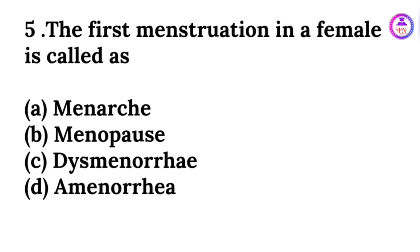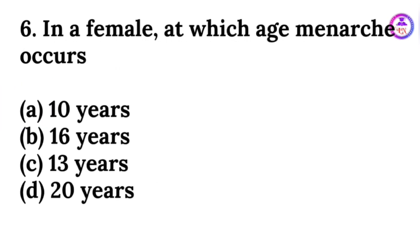The first menstruation in a female is called menarche. In females, at which age does menarche occur? The answer is 13 years.